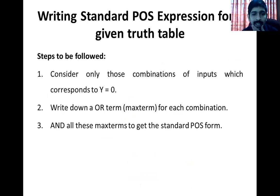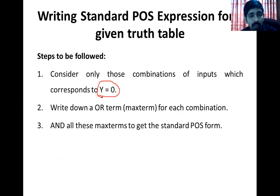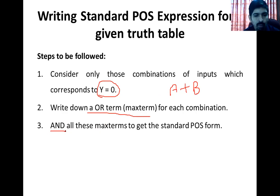I hope यह clear हो गया — कैसे truth table से SOP form बनानी है। Next है: truth table से POS form बनानी है। Same truth table से हम SOP बना सकते हैं, same POS भी बना सकते हैं, पर दोनों में फर्क होगा। SOP बनाने के time हम Y equal to 1 देखते थे; POS बनाने के समय हमें Y equal to 0 वाली terms उठानी हैं। We will consider only those combinations which give output Y equal to 0। उनको max term के according लिखना है — max term में OR operation होती है variables के बीच। जब सारी terms बन जाएंगी, उन सबको AND कर देंगे — वो बन जाएगी POS form।